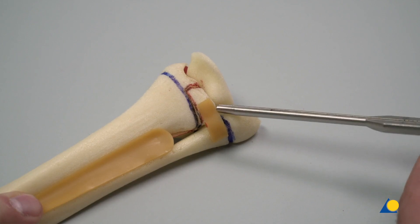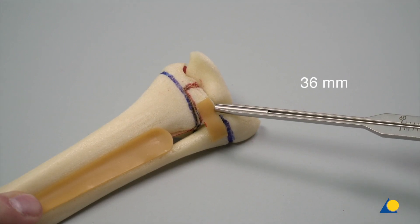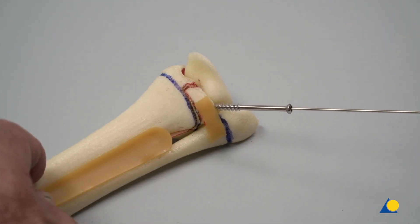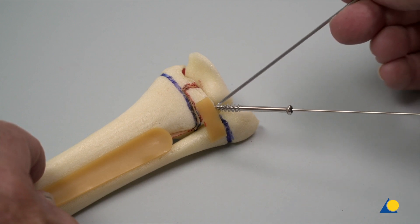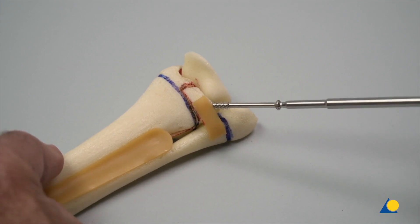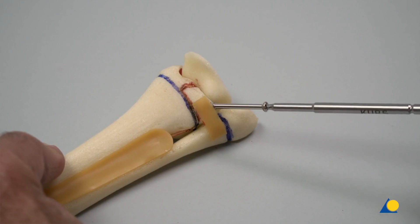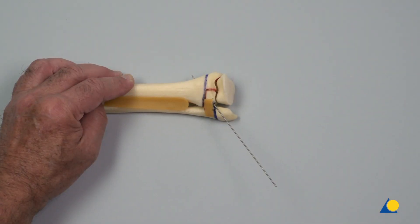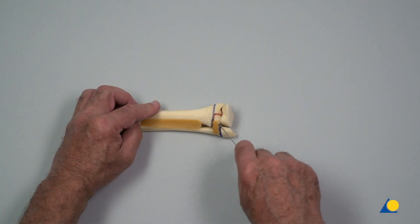The screw length is measured with the depth gauge. A 4.0 mm self-drilling, self-tapping cannulated screw is slid over the guide wire. In a clinical situation, an incision for the screw would be necessary. The screw is inserted using the cannulated hexagonal screwdriver. The joint surface is reduced and compressed. The guide wire is removed.